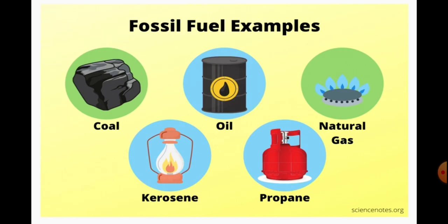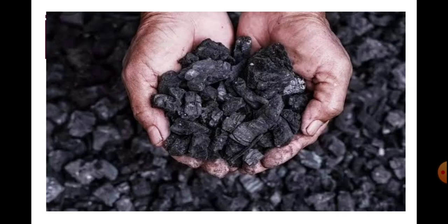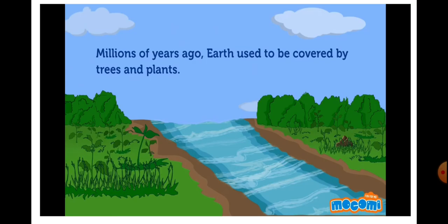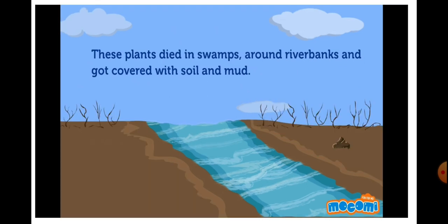Some examples of fossil fuels are coal, oil, natural gas, kerosene, and propane. First, we will talk about coal. Coal is formed when vegetation gets buried underground for millions of years. It decomposes due to the high pressure and heat inside the earth.